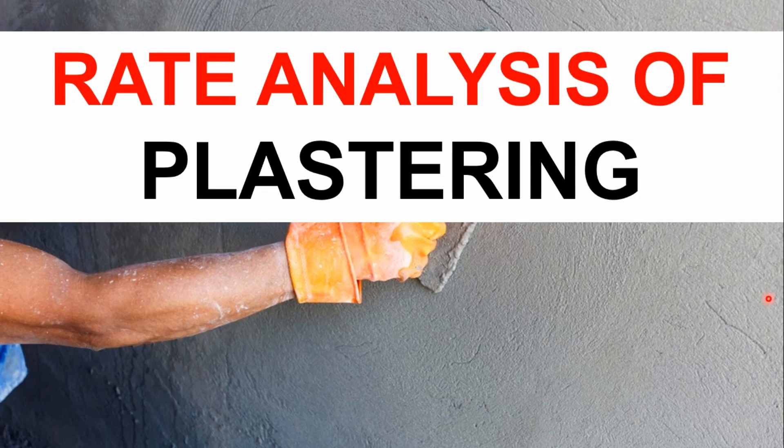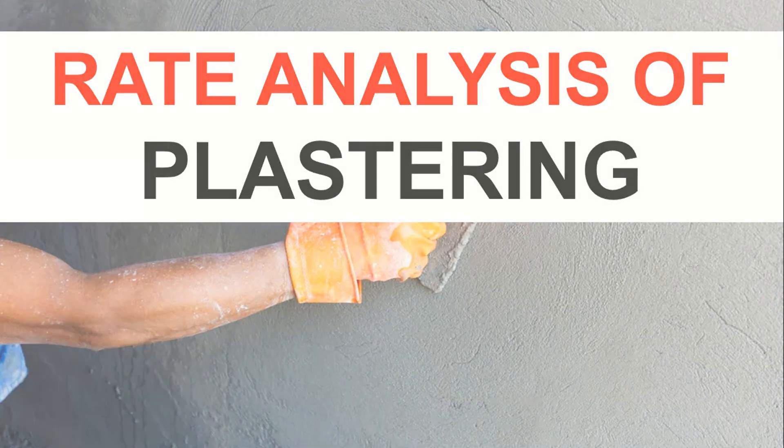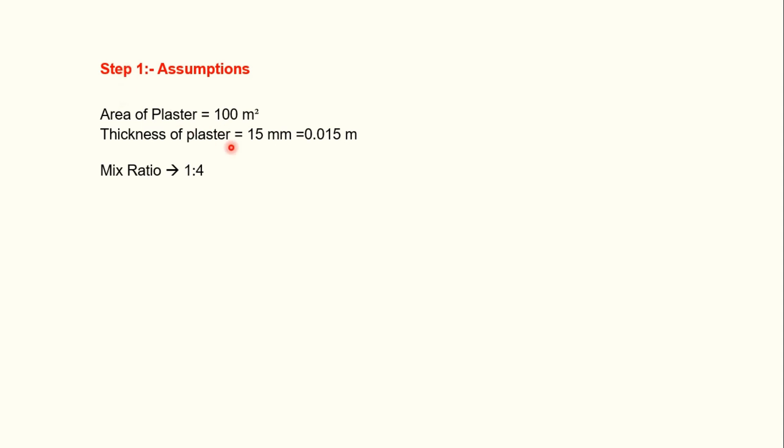Welcome to We Civil Engineers. In this video I am going to teach you how to calculate the cost of cement plastering. I am assuming area of plaster as 100 square meters, thickness of plaster as 15 mm — first layer thickness is 10 mm and second layer thickness is 5 mm — and mix ratio as 1:4.